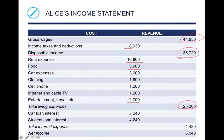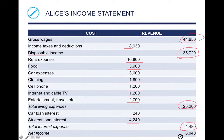She also has car loan interest and student loan interest. The total interest expense is that amount, and when you work it out — figuring income minus total living expenses minus total cost of interest — the amount of money that Alice has at the end of the year is six thousand and forty dollars.